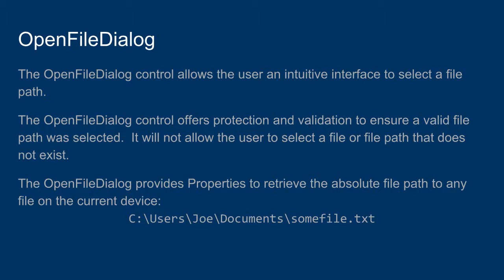The Open File Dialog has some properties that allow the program to retrieve an absolute file path to any file on the current device. For example, if I have some file that exists in the Documents directory, in the Joe directory, in the Users directory, in the C: drive, I can navigate and select that file on my computer and retrieve the entire file path.